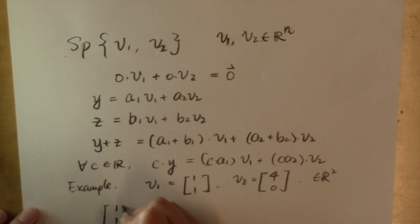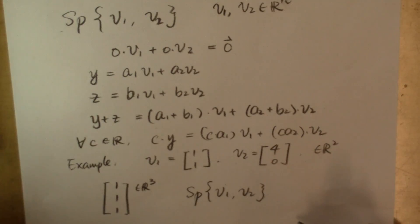1], which is in the three-dimensional euclidean space possibly be in the span of v sub 1 and v sub 2? No, you can't because all the linear combinations of v sub 1 and v sub 2 are going to be two-dimensional vectors.